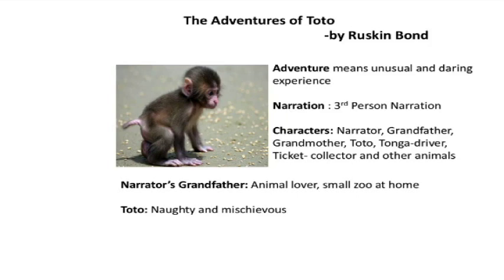The setting takes place in a narrator's hometown in India — not very far; it happens in the countryside. As for the grandfather, he loves animals — he is an animal lover, and he had created a small zoo in his home. Toto the baby monkey was very naughty and mischievous. Monkeys create lots and lots of trouble and problems; they are very naughty. So the story is Adventures of Toto — we will come across the different unusual and daring experiences of Toto.